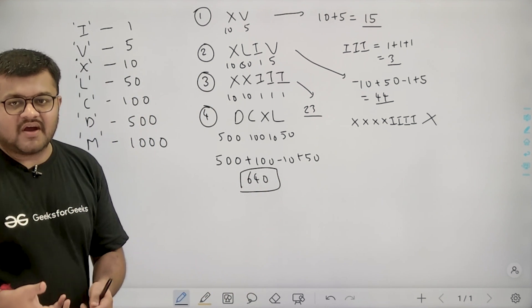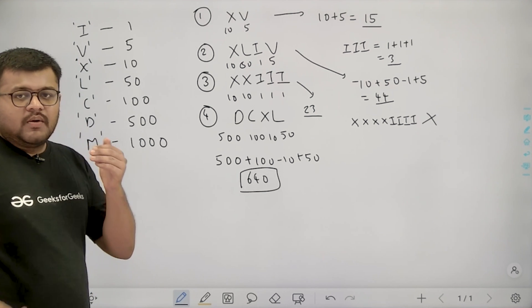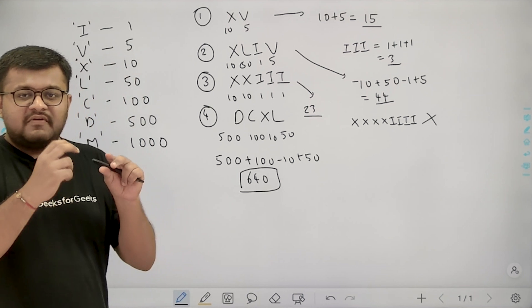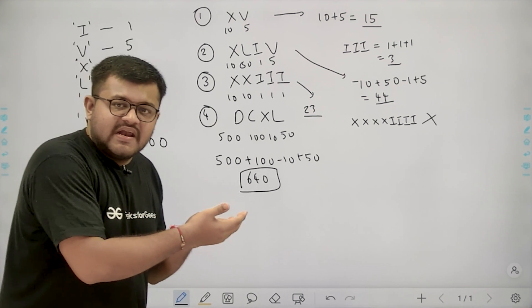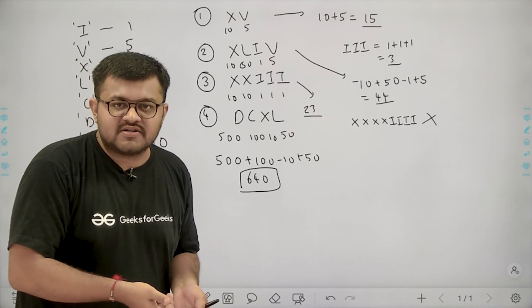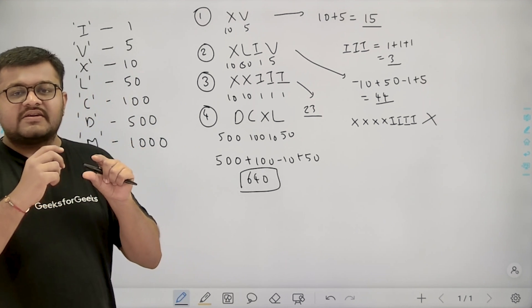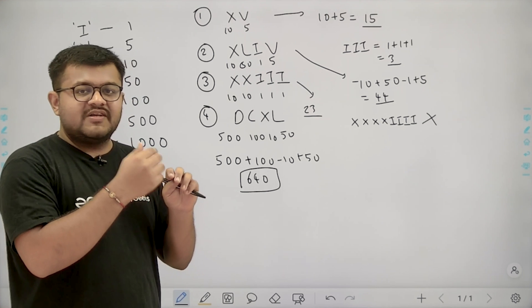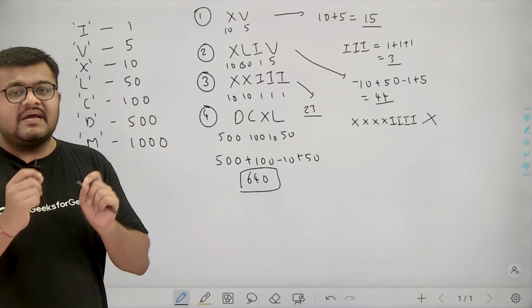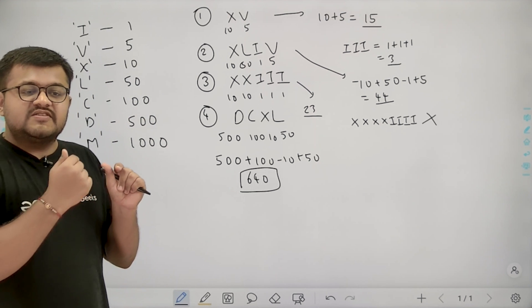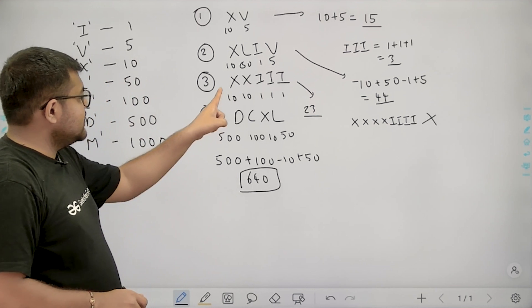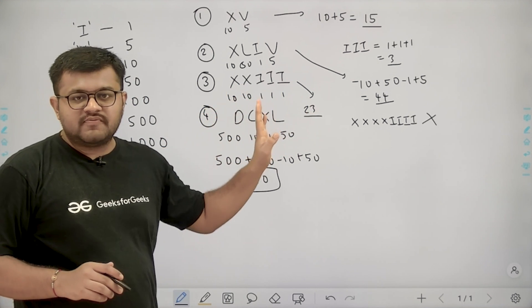To summarize the algorithm: traverse the string and add up the value of each character whenever it is the last character or its value is greater than or equal to the next character's value. When a character's value is strictly less than the next character's value, subtract that value. If values are equal, we also add.